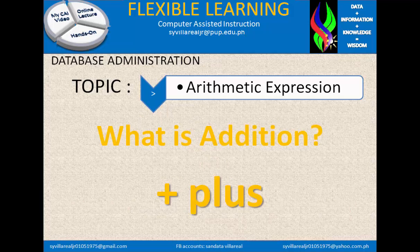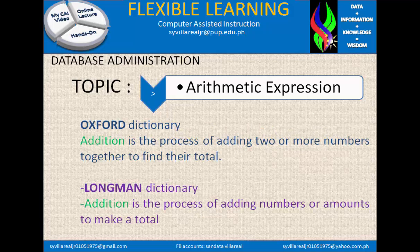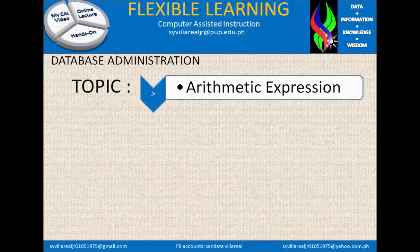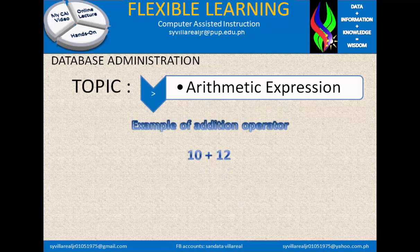What is addition, using the plus sign? In the Oxford Dictionary, addition is the process of adding two or more numbers together to find their total. In the Longman Dictionary, addition is the process of adding numbers or amounts to make a total. In the Merriam Dictionary, addition came from the Latin word 'aditio'. Addition is the process, denoted by the plus sign, of combining two or more numbers to obtain their sum. Examples of addition operators: 10 + 12, 3 + b + c, 19 + 4, and 8 + b.